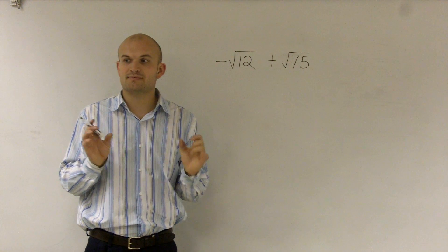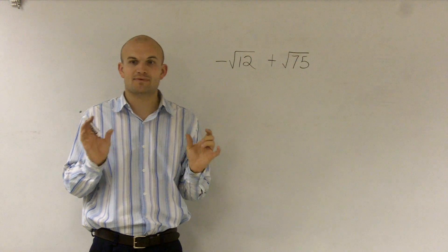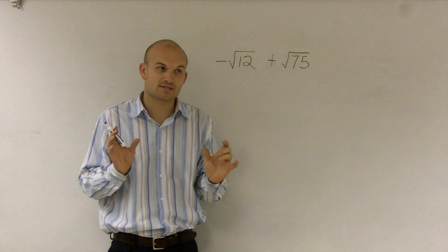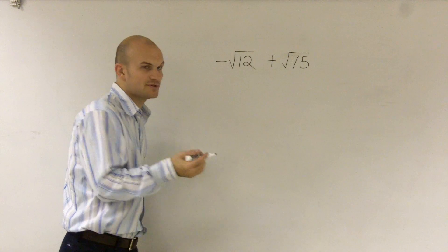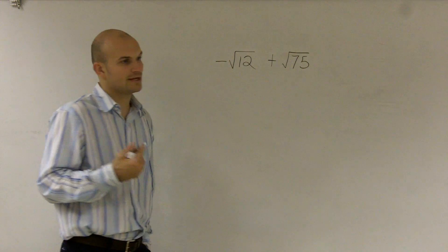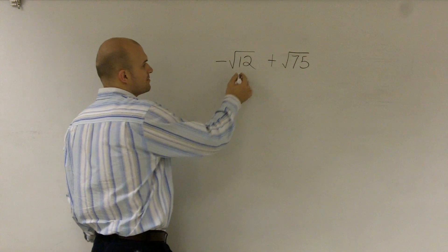So what I want to do is I want to see if I can simplify each one of these. And then if we get to them to be the like radicals, meaning the same number under the same square root, then I can combine them. So I'm going to use the factoring technique or the factoring tree technique to simplify these.